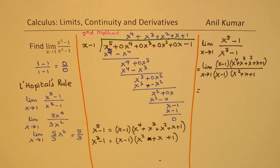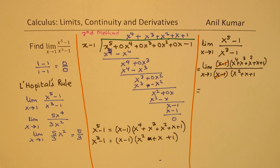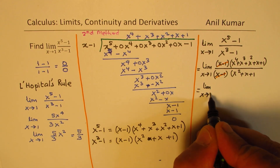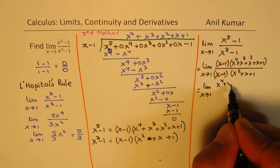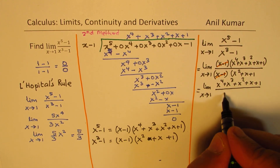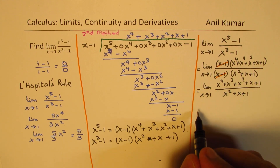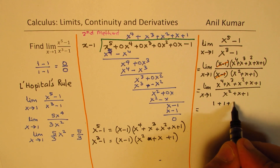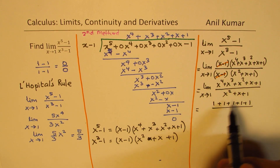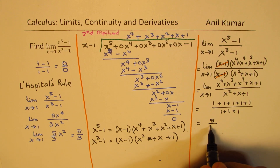Now clearly, the term x minus 1 cancels. We can write this as limit x approaches 1, with numerator x to the power of 4 plus x cubed plus x squared plus x plus 1, and denominator x squared plus x plus 1. Now if I substitute 1, I get 1 plus 1 plus 1 plus 1 plus 1 — that's 5 ones in the numerator — and 3 in the denominator. So we have our answer, which is 5 over 3.